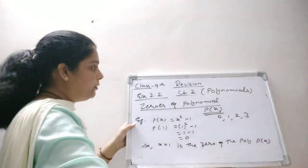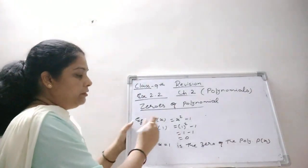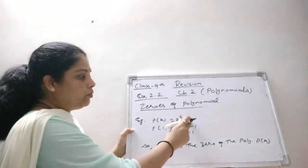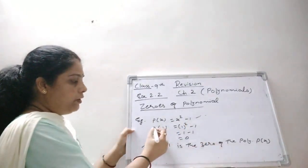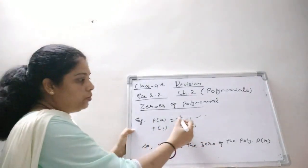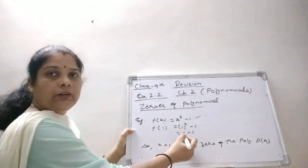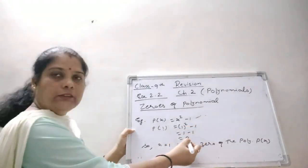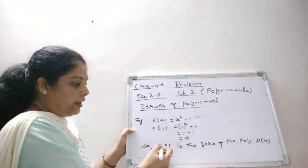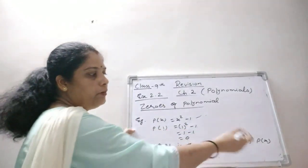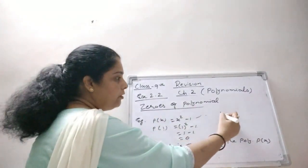Let's take one example. I have taken the polynomial x² minus 1. If we put x = 1 in x² minus 1, we get 1² minus 1, which is 1 minus 1 equals 0. The answer is 0, which means x = 1 is the zero of the polynomial P(x).